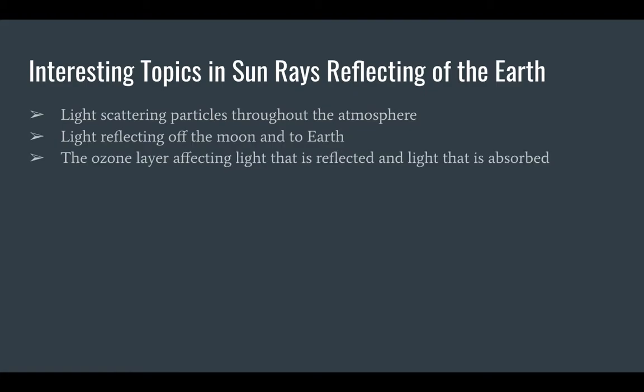The ozone layer and how that affects light that is reflected and light that is absorbed: the ozone layer is a layer in the earth's atmosphere that absorbs almost all of the UV radiation from the sun's rays. However, this layer was being depleted for quite some time because of humans, causing much more UV rays to directly reach the earth and be absorbed into the earth, gradually increasing the natural temperature of the earth.